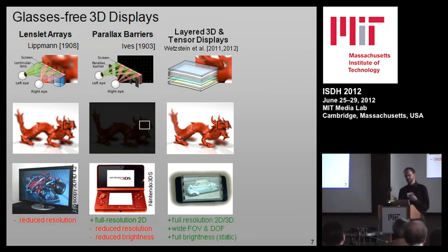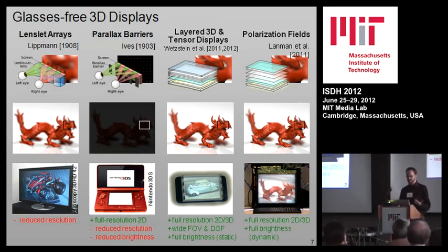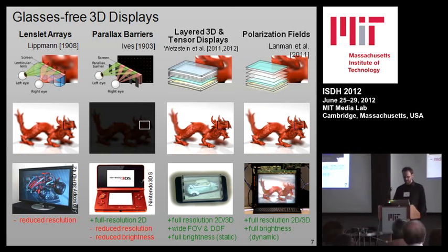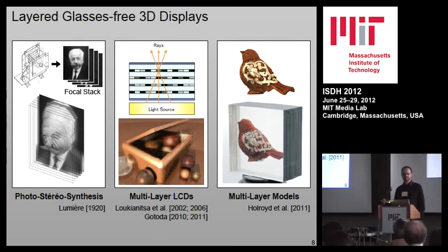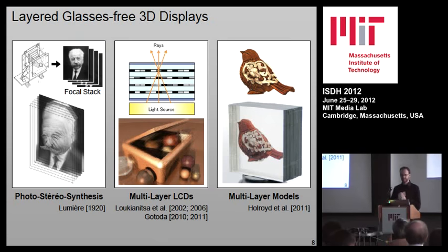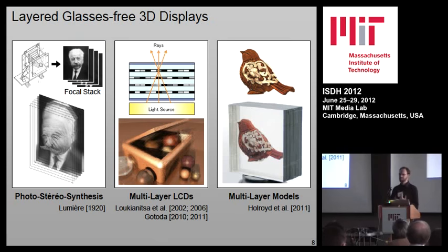Earlier this morning we talked about the layered 3D static device that can achieve full in-plane resolution. Now I'm going to talk about how we make that into a video display — adapting both the computation and the optics to work with commodity hardware you can build today. We're not the first people to think about layering transparencies to make 3D; Lumière in the early 20th century was using a focal stack to create 3D, though without sophisticated computational hardware he couldn't get where we are. We were actually the first to build a working prototype and analyze the performance bounds.